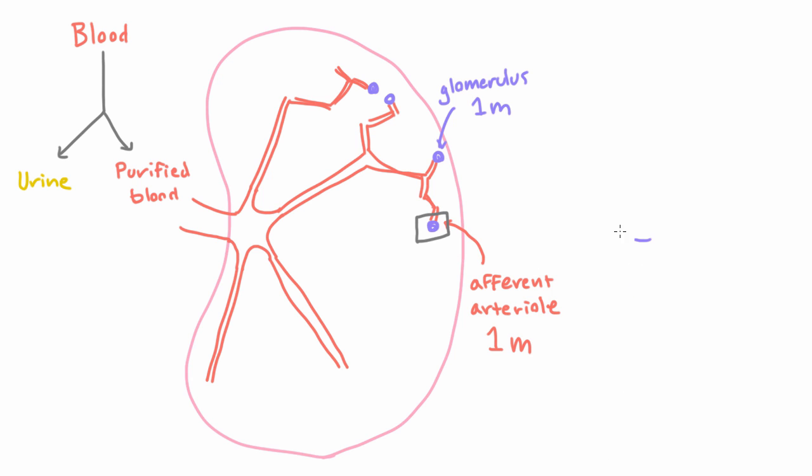So we'll continue to draw our glomerulus as just this cartoonish little glob, and we know that we have an afferent arteriole coming in, and then we have two things coming out.